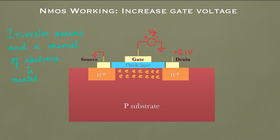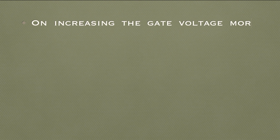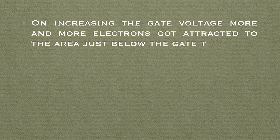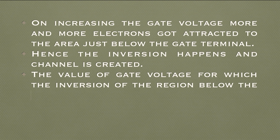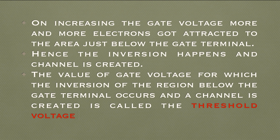Because of the increasing gate voltage and more electrons getting attracted, the area just below the gate now behaves like N-type instead of P-type — this process is called inversion. As more electrons accumulate, a channel is created. The value of gate voltage at which inversion occurs and the channel is formed is called the threshold voltage — the minimum gate voltage required to convert that area from P-type to N-type and create the channel.